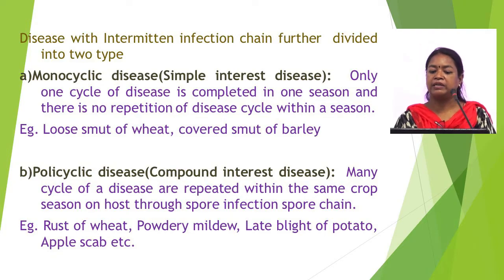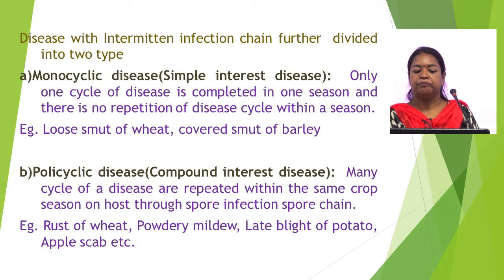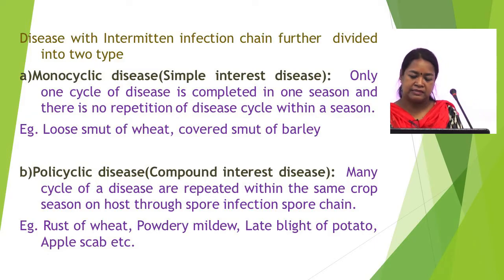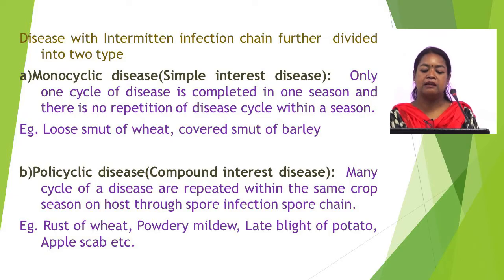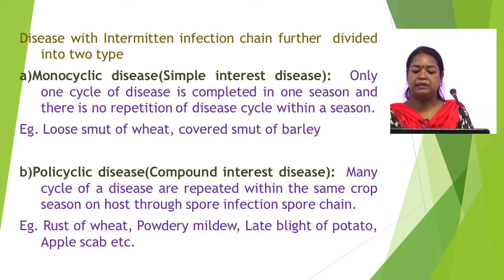The second type of intermittent infection chain is polycyclic disease or compound interest disease. In this type of infection chain, many cycles of disease are repeated within the same crop season on the host through spore infection and spore chain. Examples of polycyclic diseases are rust of wheat, powdery mildew of many vegetables, late blight of potato, and scab of apple.